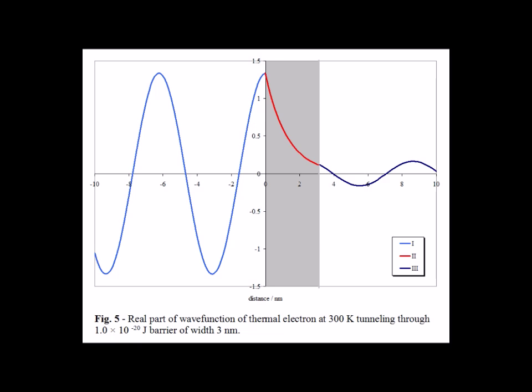In figure 5, we have the electron again tunneling through a barrier that is 3 nanometers wide against a potential of 1.0 times 10 to the minus 20 joules.